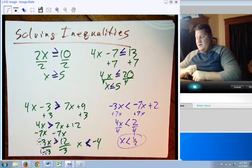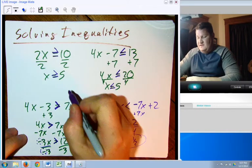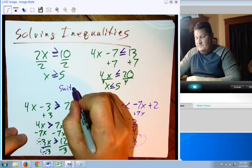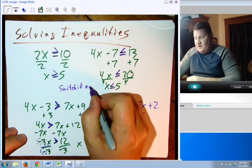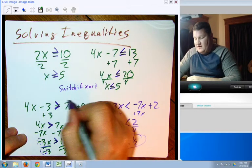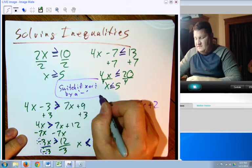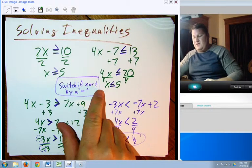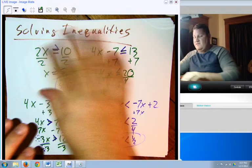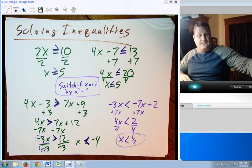Okay. The only time that you have to switch the sign is you switch if you multiply or divide by a negative. That is the thing to remember right there. Switch if you multiply or divide by a negative. Otherwise, the rest of the solving is exactly the same. All right.